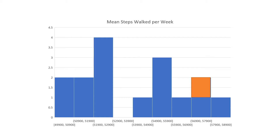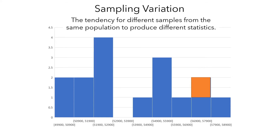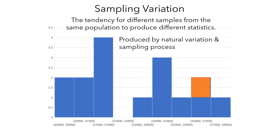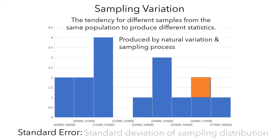This type of variation is called sampling variation, which is the tendency for different samples from the same population to produce different statistics. Sampling variation is produced by a combination of natural variation in the population and the random aspect of the sampling process. Much like the way we measure natural variation using the idea of standard deviation, we measure the amount of sampling variation using something called standard error, which is the standard deviation of the sampling distribution.